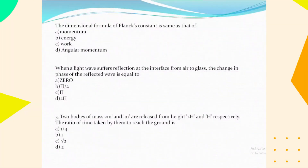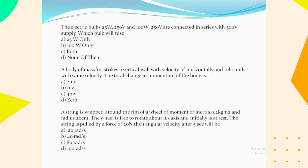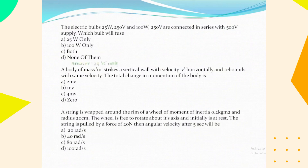The dimensional formula of Planck's constant is the same as that of angular momentum. When a light wave suffers reflection at the surface from air to glass, the change in phase of the reflected wave is equal to pi. Two bodies of mass 2m and m are released from heights 2h and h respectively; the ratio of time taken by them to reach the ground is √2. Two electric bulbs rated 25W/250V and 100W/250V are connected in series with a 500V supply; the bulb that will fuse is the 25W one only.